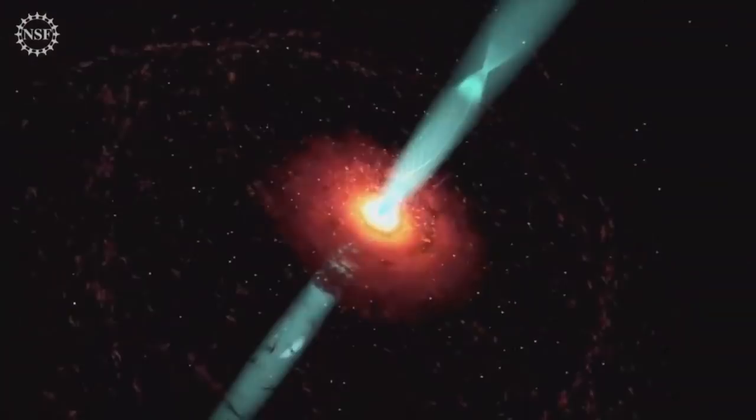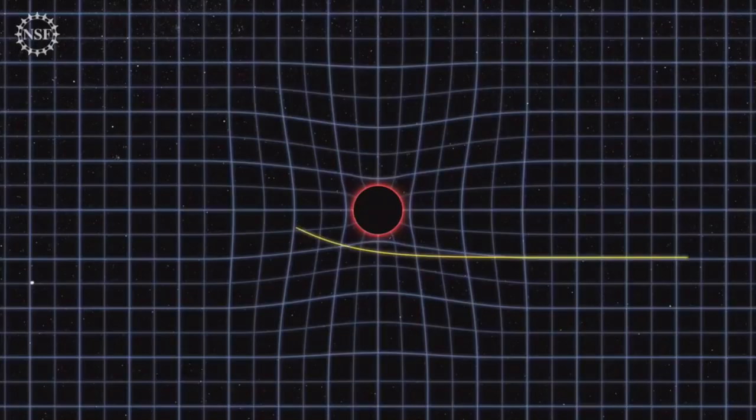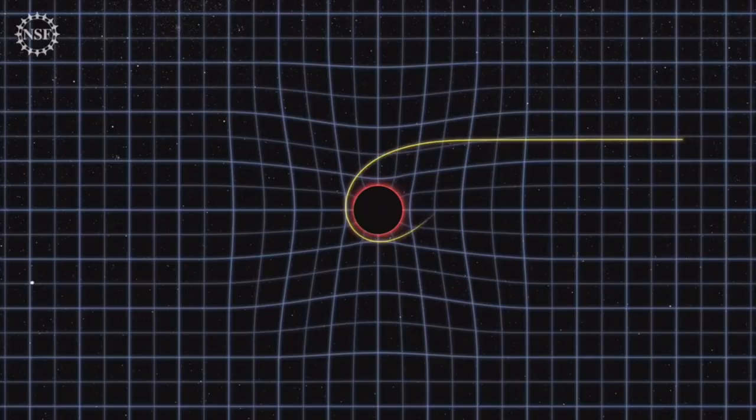In M87, one of these jets is pointed very nearly toward us. The EHT images are influenced both by these bright emitting regions, the rotating accretion disk and outflowing jets, and by gravity itself.